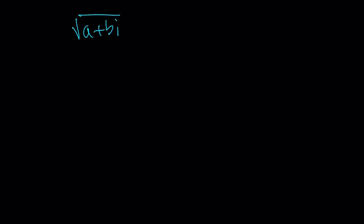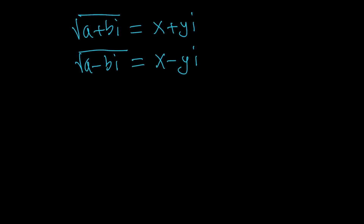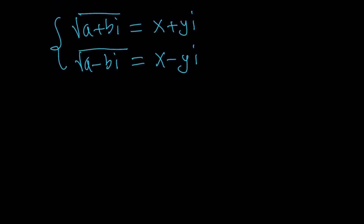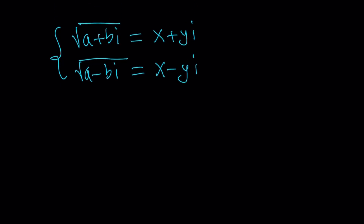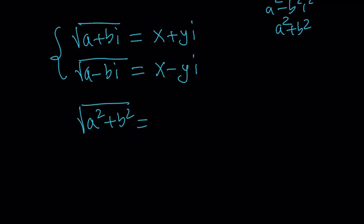So let me copy those down. The square root of a plus bi equals x plus yi, and the square root of the conjugate is the conjugate. To solve the system, I'm going to multiply these two equations together. From a plus b and a minus b you normally get a difference of two squares, but here we get a squared minus b squared i squared, which equals a squared plus b squared — a sum of squares. And on the other side, we get x squared plus y squared.